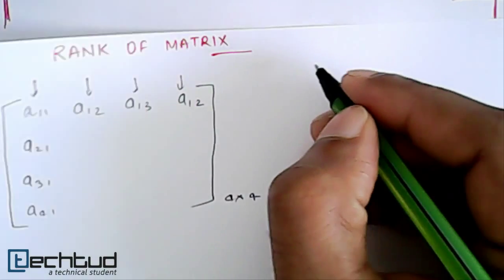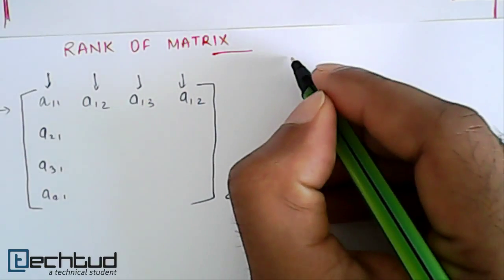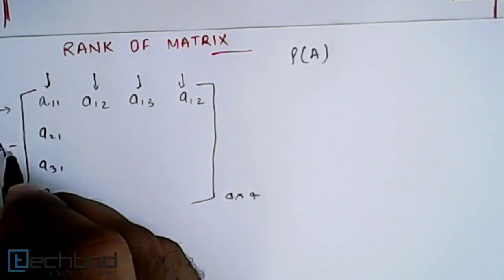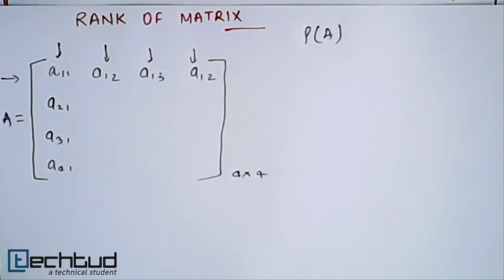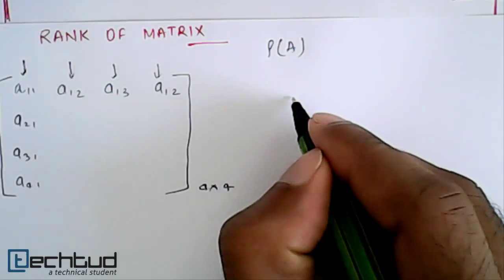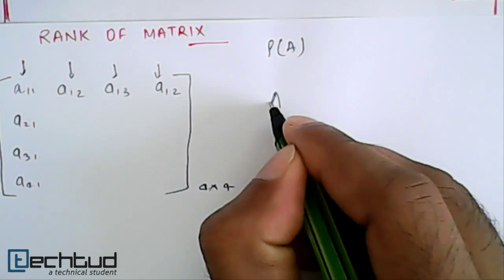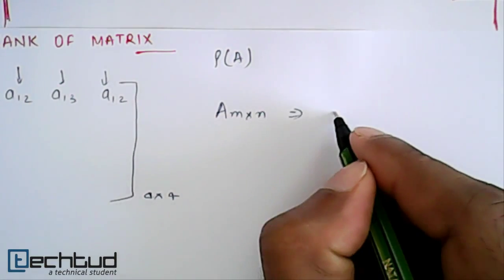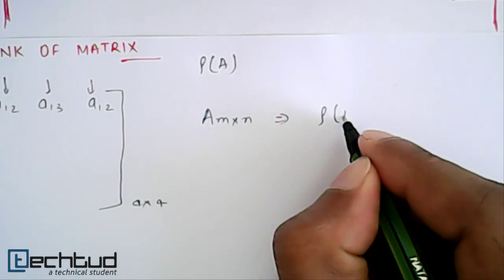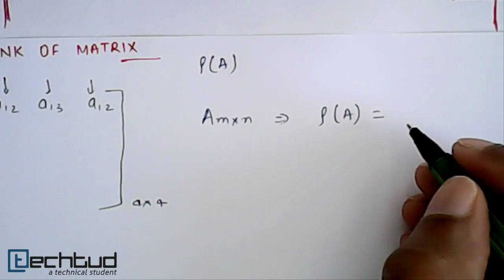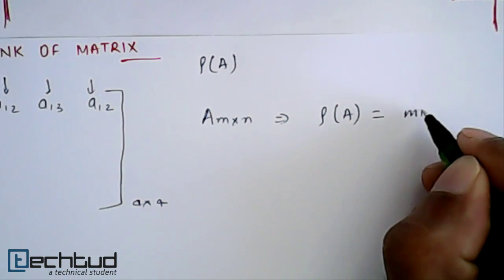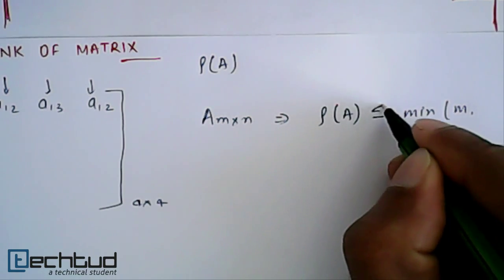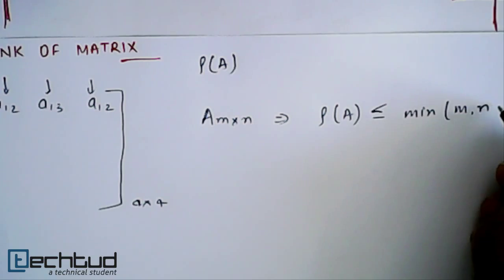We represent rank of matrix by ρ(A). How do we calculate it? If we have a matrix A that is m by n, then the rank of A will be less than or equal to the minimum of m or n.